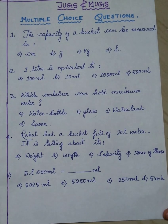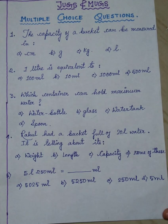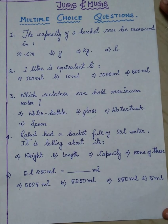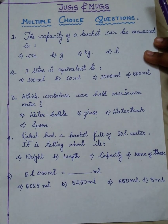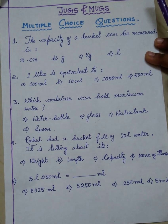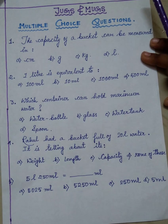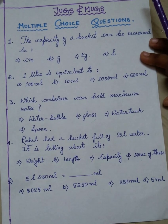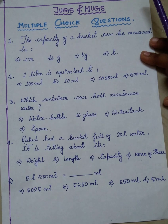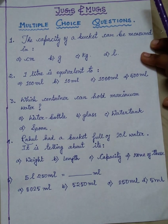Next, five number is 5 litre 250 millilitre is how much millilitre? The four options are 5025 millilitre, 5250 millilitre, 250 millilitre and D5 millilitre. Next we will go to the next page.